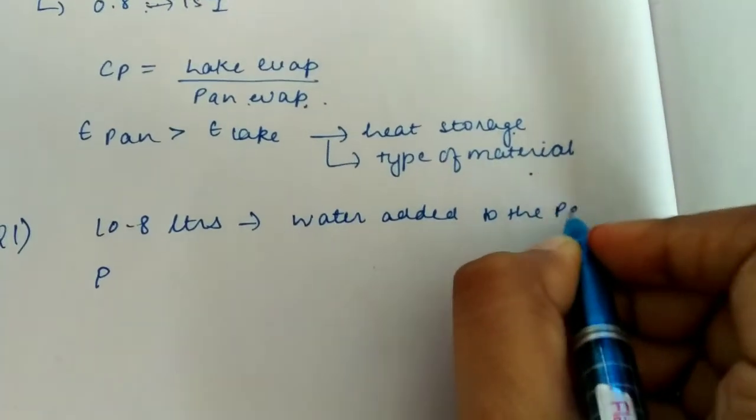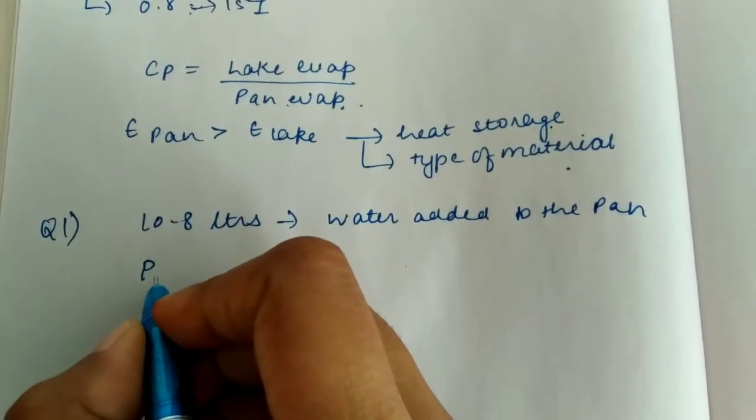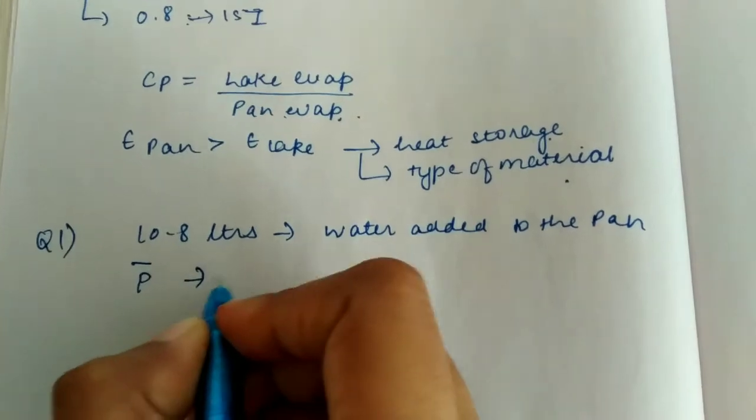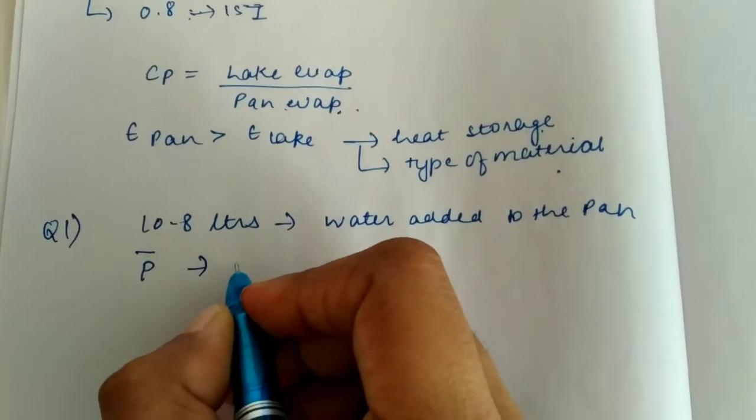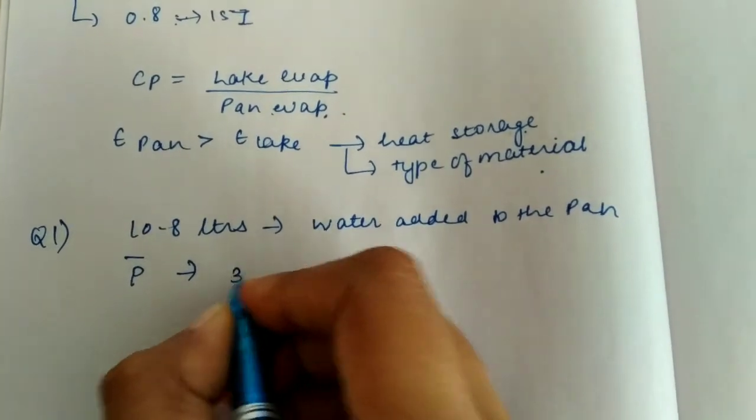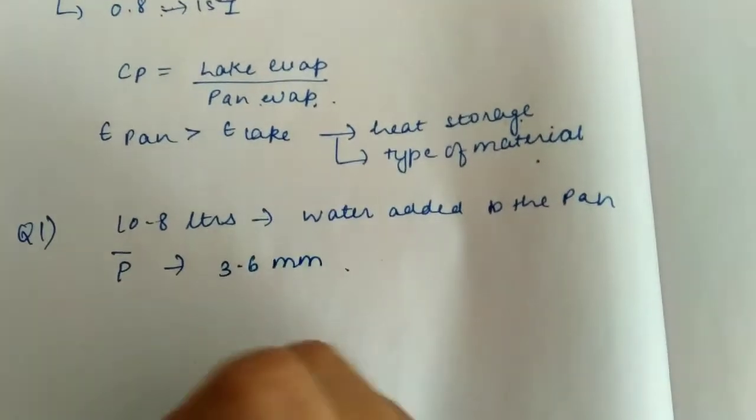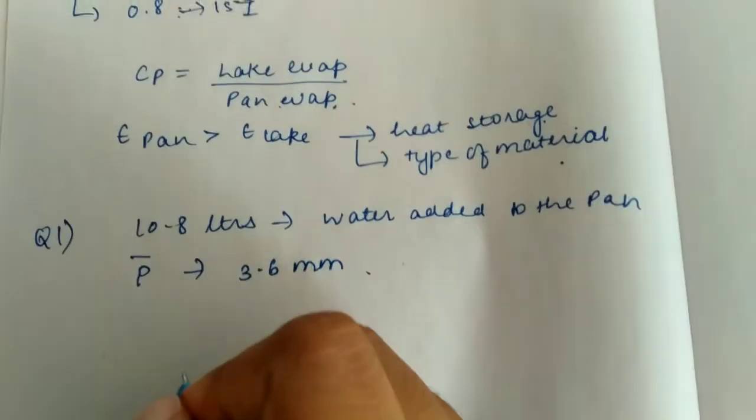pan. Also, in that area the rainfall recorded, that is the mean rainfall recorded, is 3.6 mm. Now the question says: if